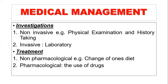Moving on to the second terminology, which is medical management. Medical management has two components: the first component is investigations, and the second component is treatment. When writing nursing management, the first thing to begin with are aims or objectives — put up a maximum of three. When writing medical management, you also begin with aims, which encompass all the components of medical management, so you do not need to write separate aims for investigations and again for treatment.